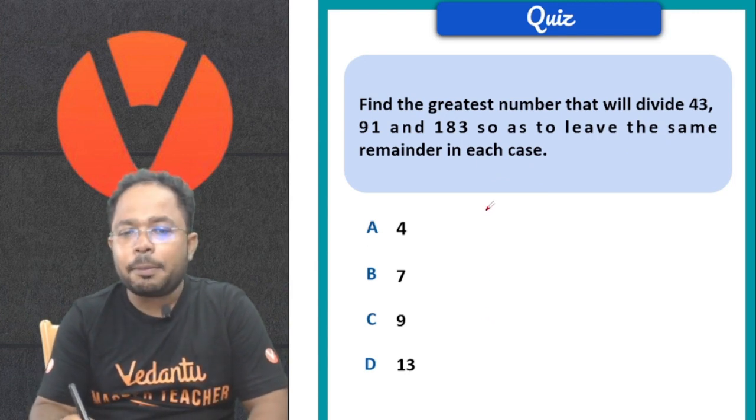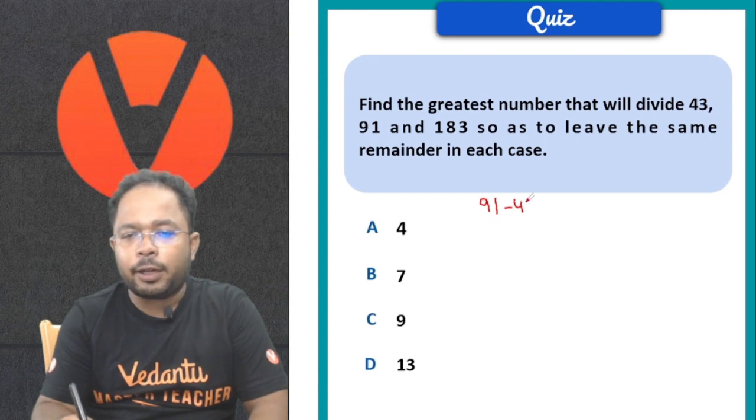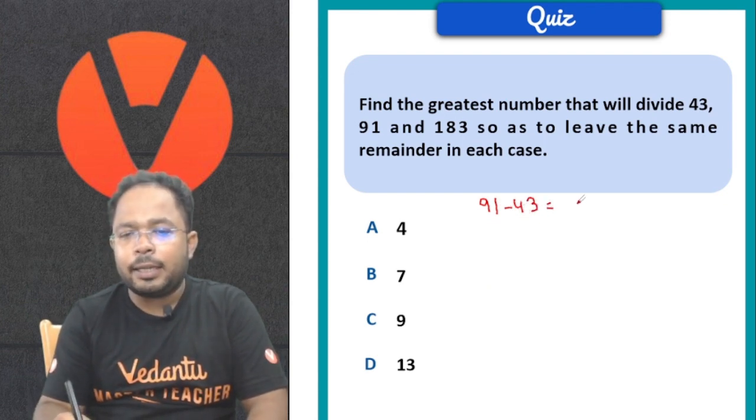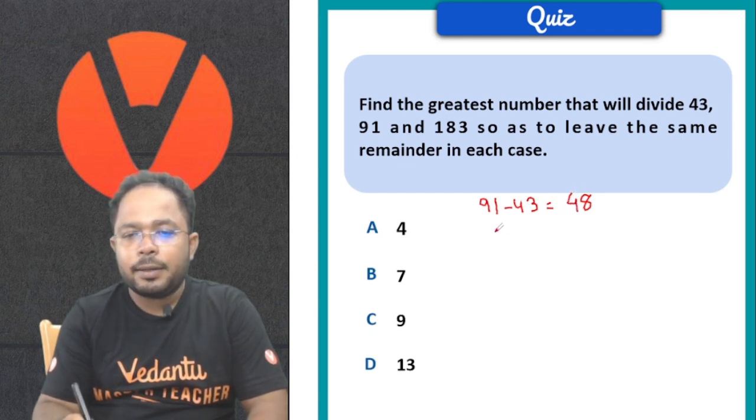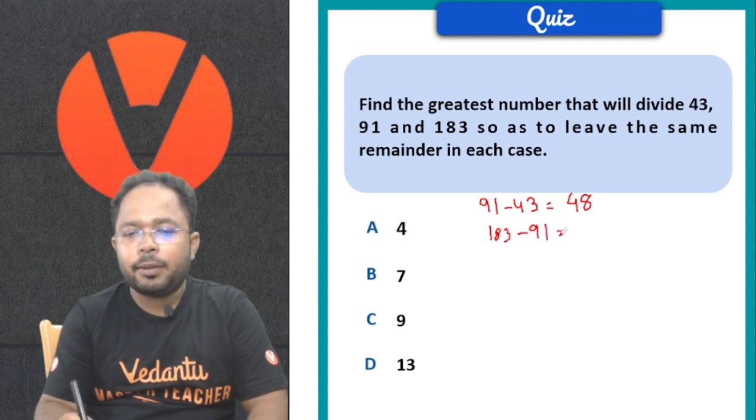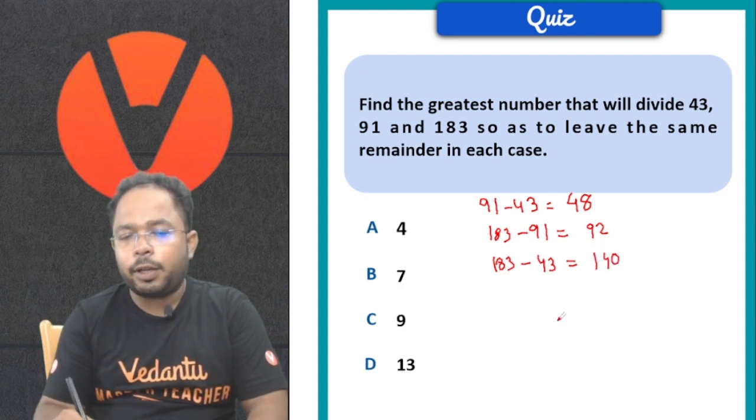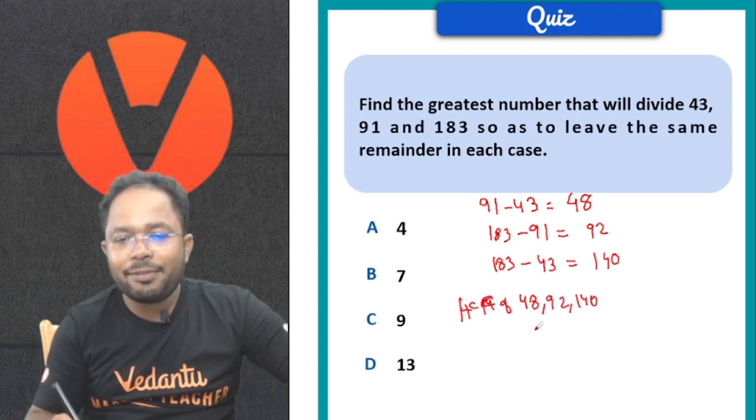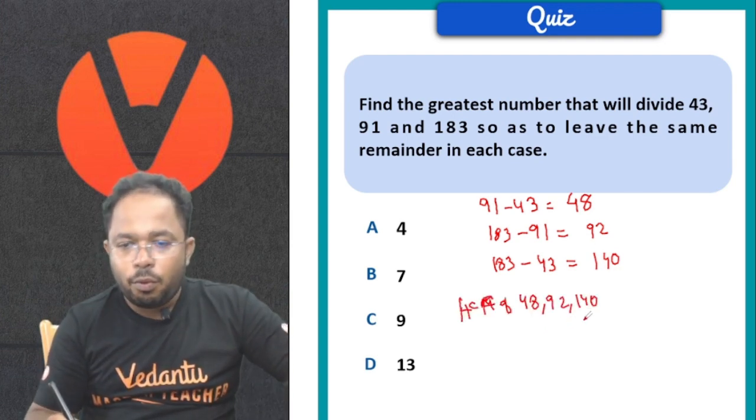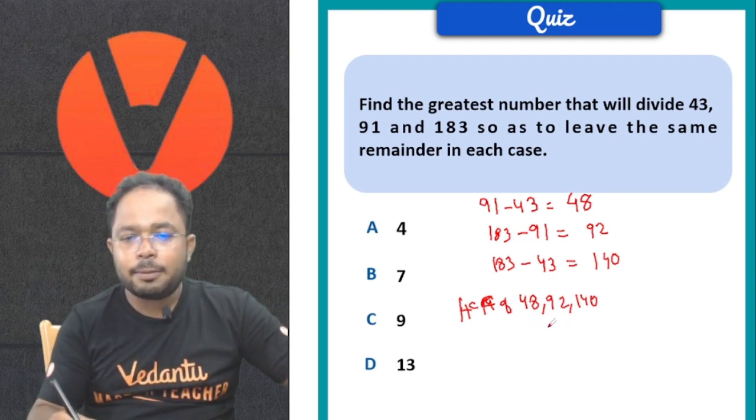So what we will do is subtract first: 91 minus 43 gives us 48. Then 183 minus 91 gives 92. Next, 183 minus 43 gives us 140. Now we have to take the HCF of 48, 92, and 140.